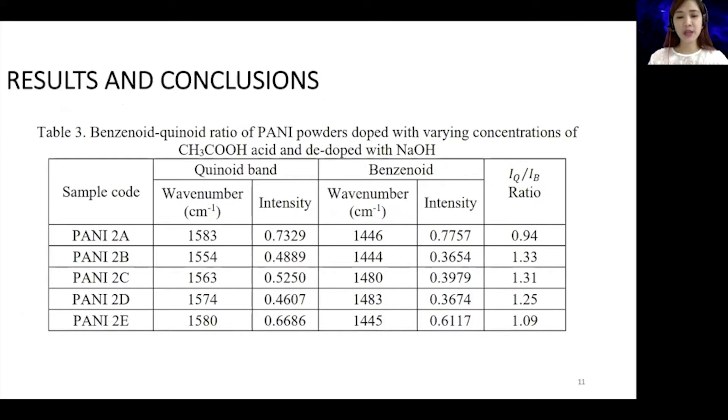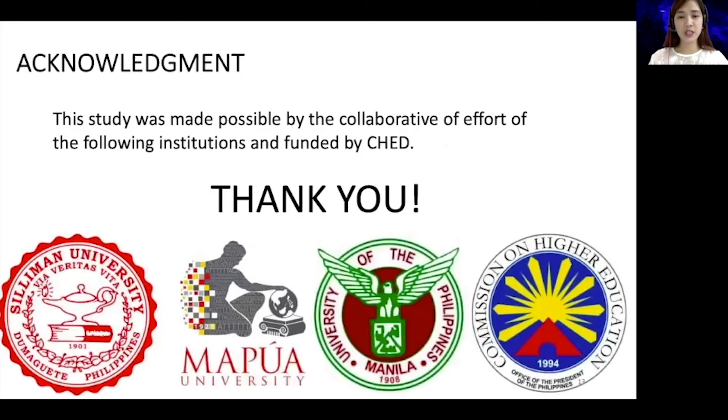In conclusion, FTIR spectra show that among all the samples synthesized, PANI 1C, 1D, 2B, 2C and 2D exhibit characteristic peaks of the base form of polyaniline, while PANI2A has the lowest oxidation out of all samples, which indicates that it is an emeraldine salt form of PANI. However, further characterization techniques and conductivity measurements are necessary to confirm these claims. Here are my references, and thank you for listening.